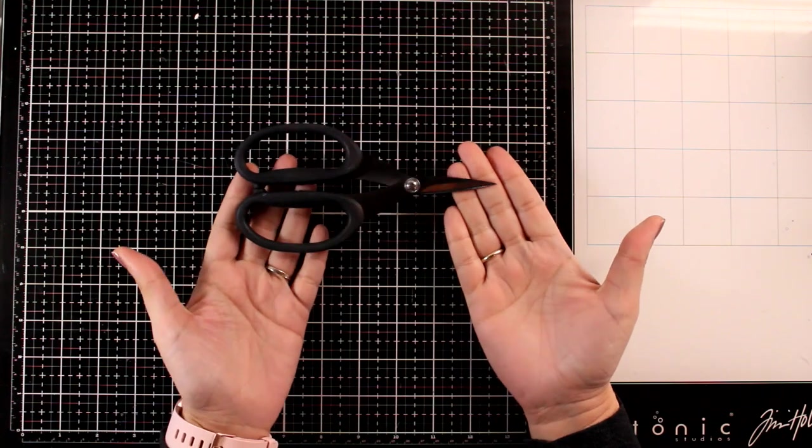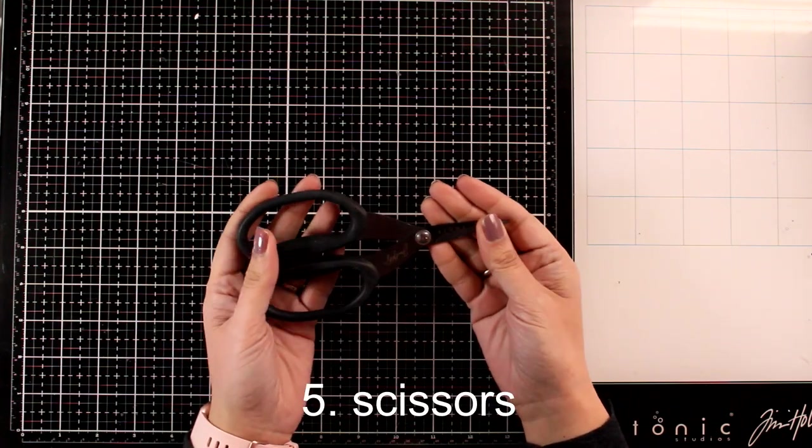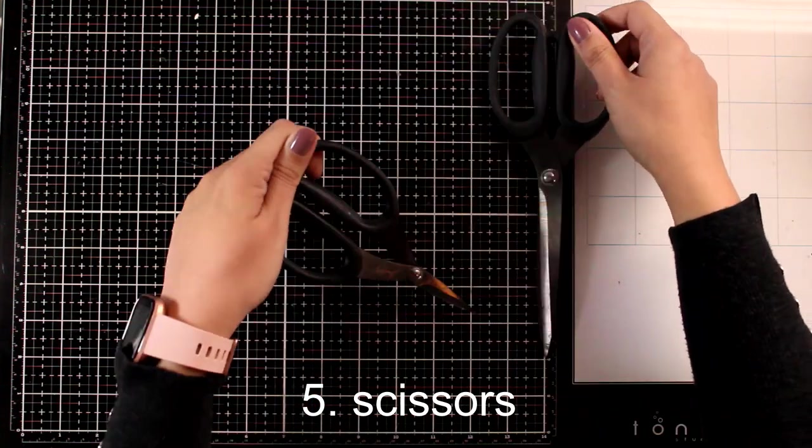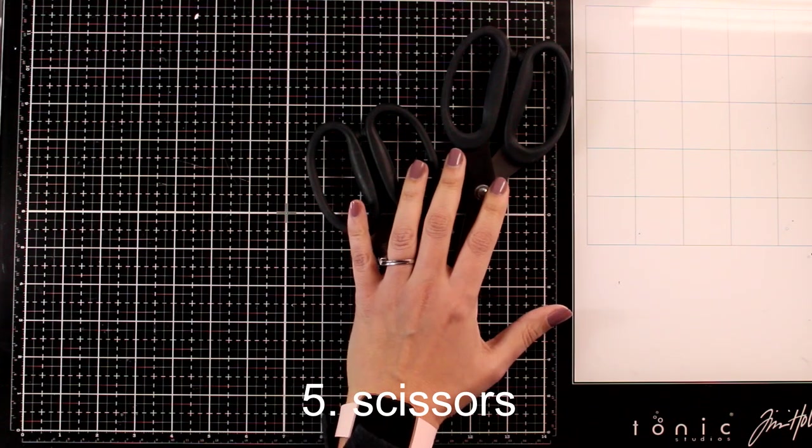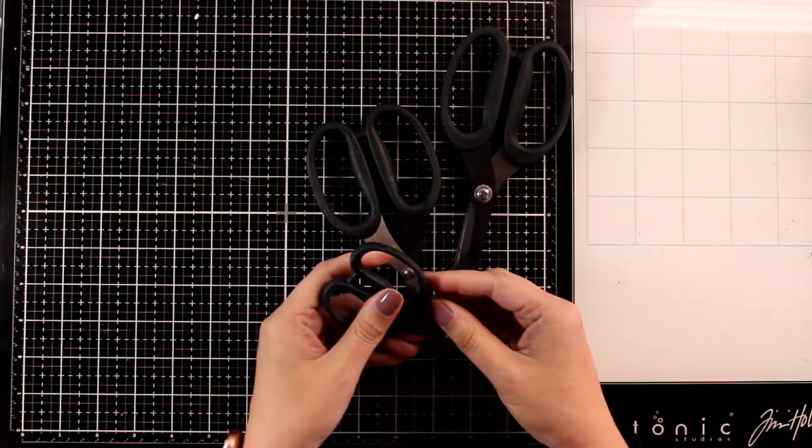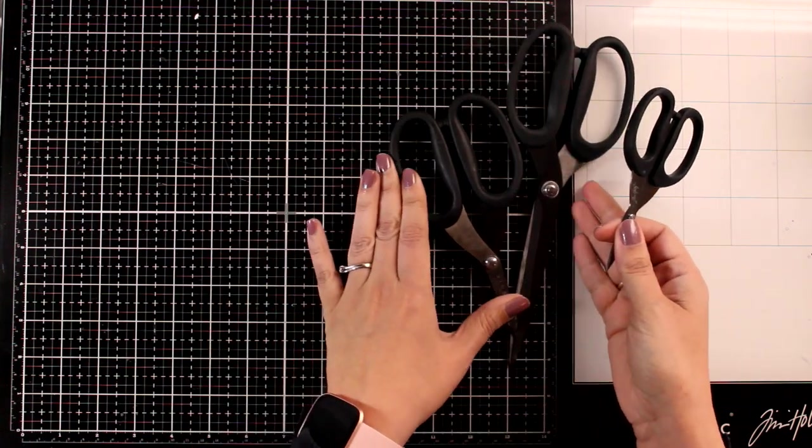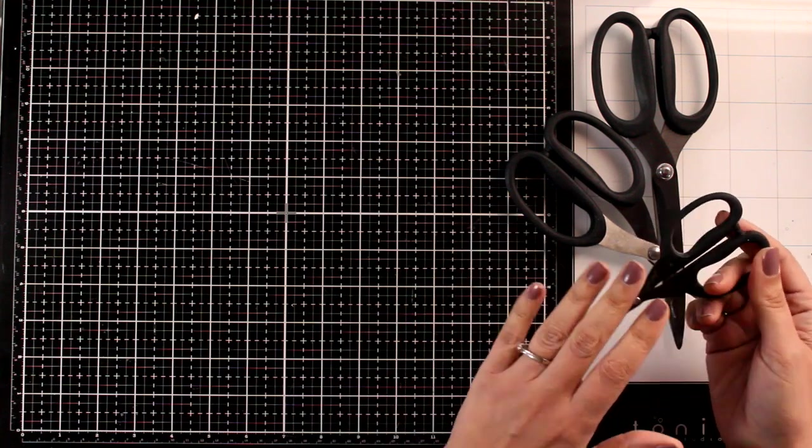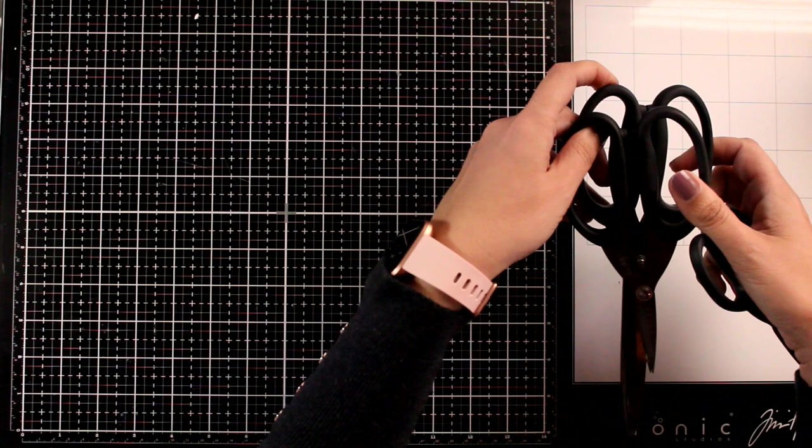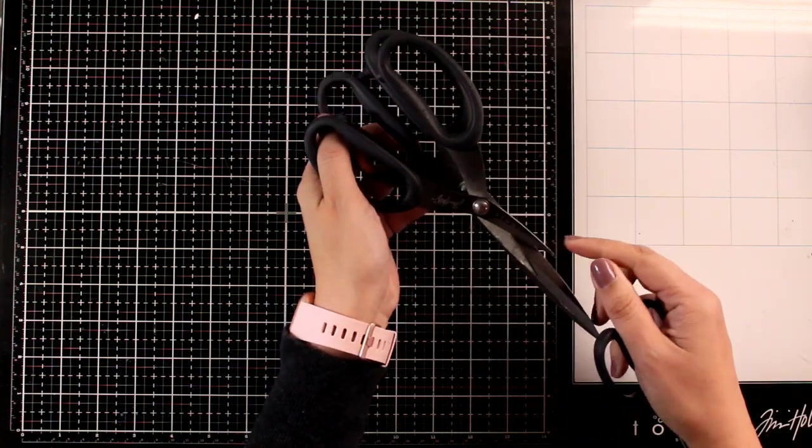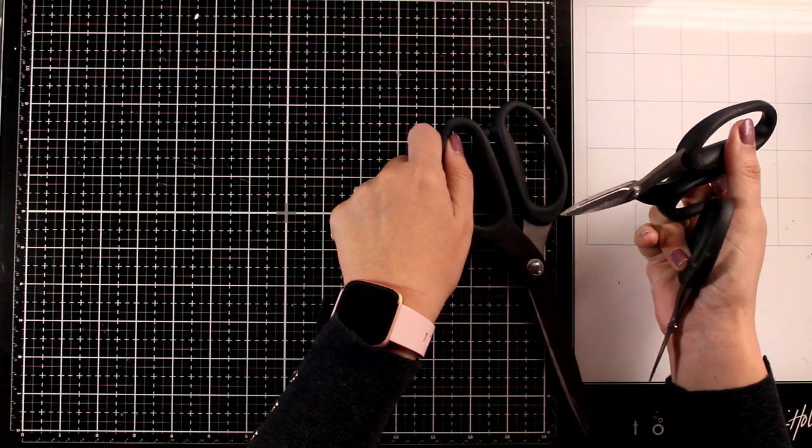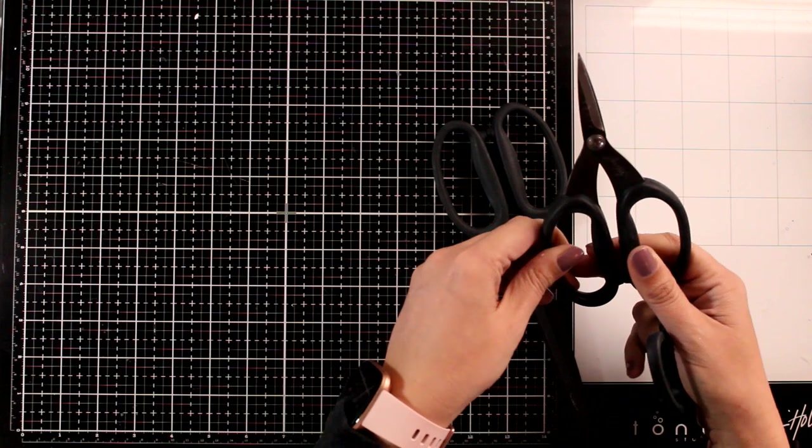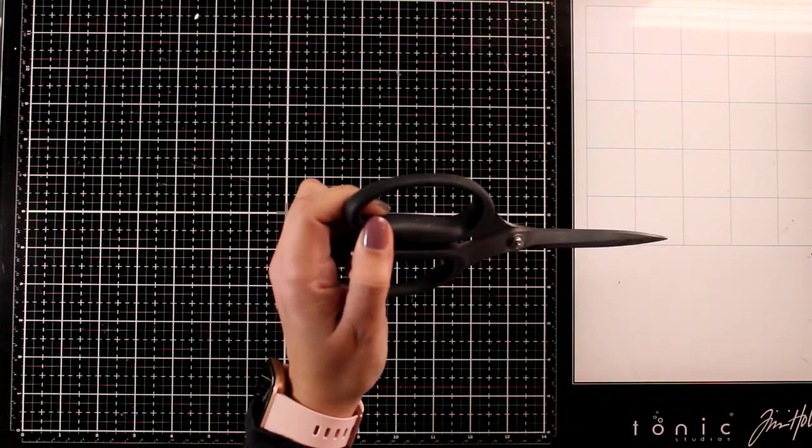Of course, you cannot craft without scissors. My favorite scissors of all time are my Tim Holtz scissors. These are by Tonic Studios and exceptional in quality. I have all three sizes and tend to use the smaller one for fussy cutting. They're never going to dull on you. They're non-stick, so you can use them to cut foam or double-sided tape.